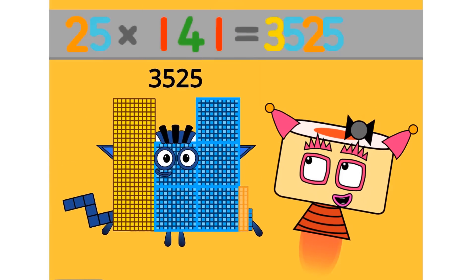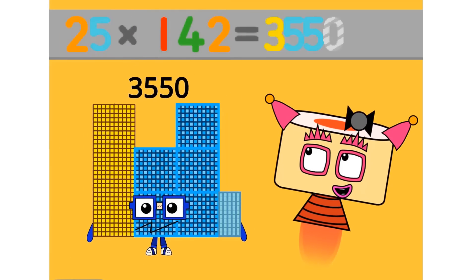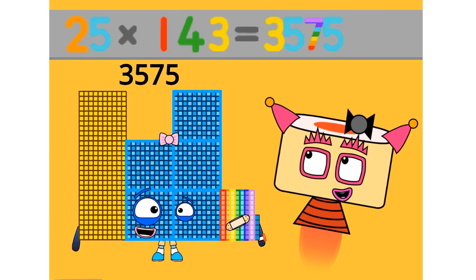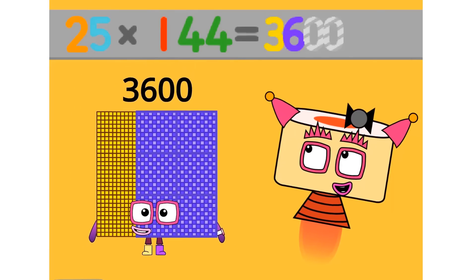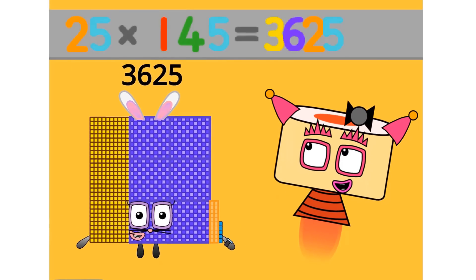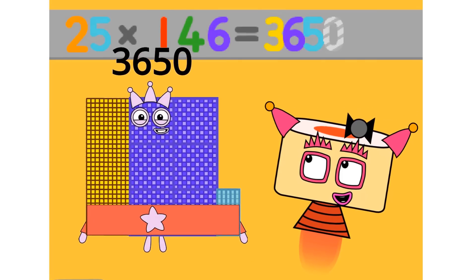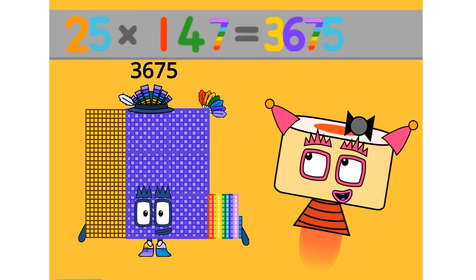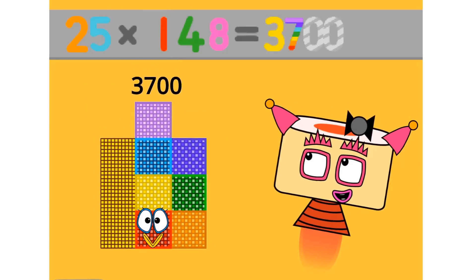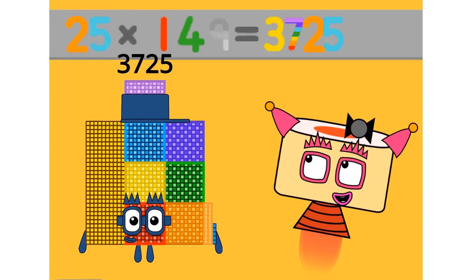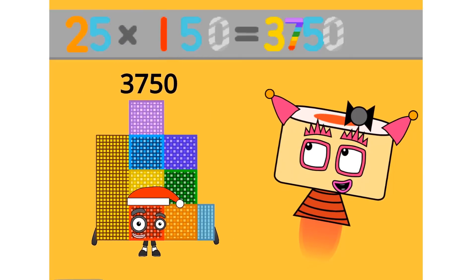25 times 141 equals 3525. 25 times 142 equals 3550. 25 times 143 equals 3600. 25 times 145 equals 3625. 25 times 146 equals 3650. 25 times 147 equals 3675. 25 times 149 equals 3725. 25 times 155 equals 3750.